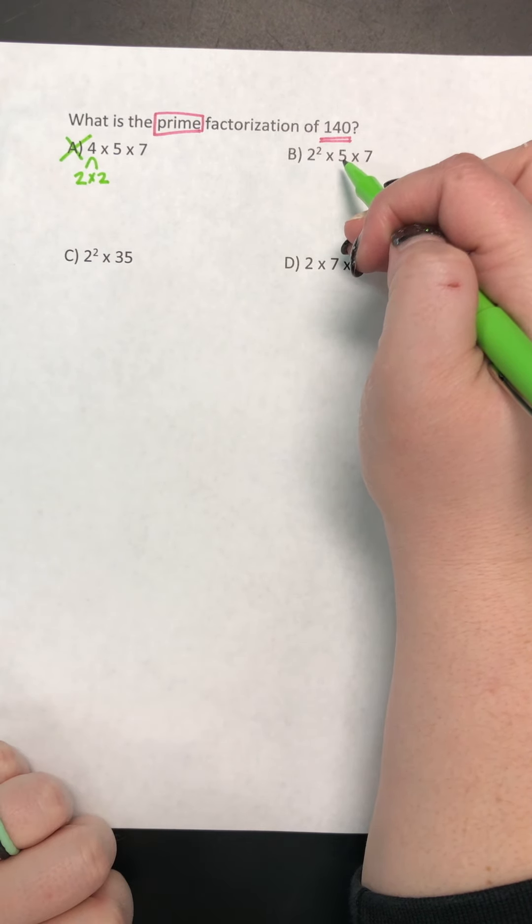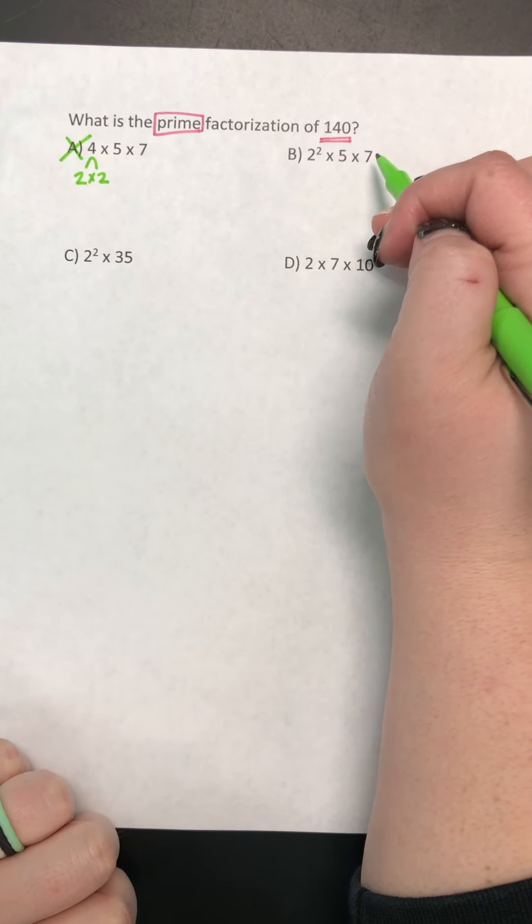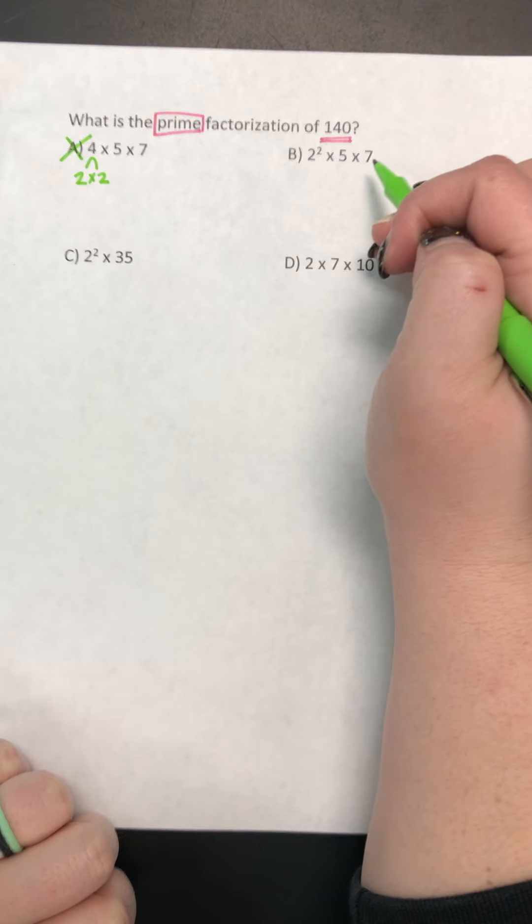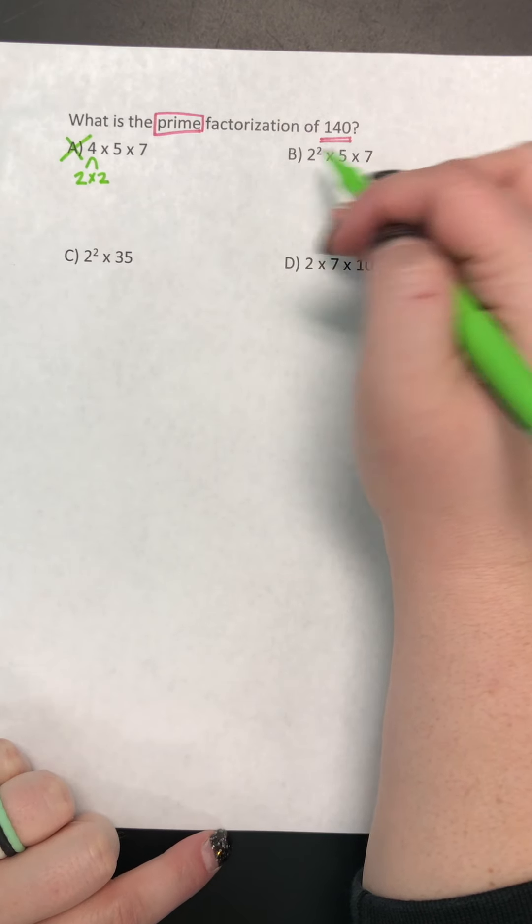The only thing that multiplies to get 5 is 1 times 5. And the only thing that multiplies to get 7 is 1 times 7. So these are all good primes, so I'm going to leave that as an option.